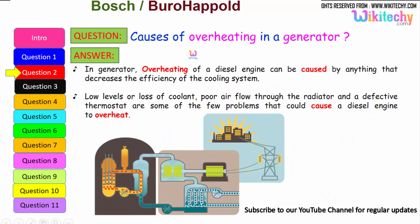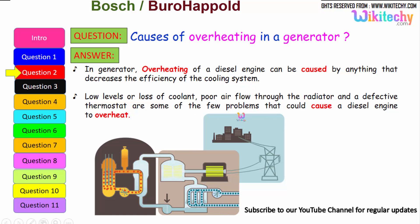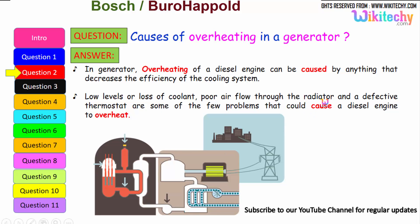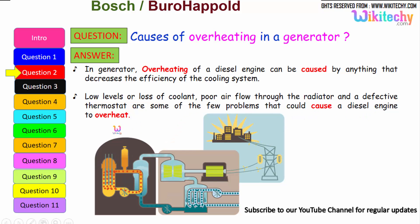Let us move on to the next question: causes of overheating in a generator. Overheating of a diesel engine can be caused by anything that decreases the efficiency of the cooling system. It can be due to loss of coolant or low levels of coolant, poor airflow through the radiators, and a defective thermostat — some of the few problems that could cause a diesel engine or generator to overheat.